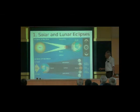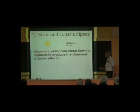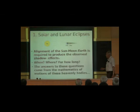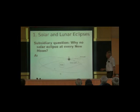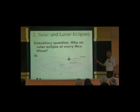The alignment of the sun, moon, and the earth is required to produce the observed shadow effects. One can ask: when does it occur, where does it occur, and for how long does it last? The answer to these questions came from the mathematics of motions of heavenly bodies. A subsidiary question: why is there no solar eclipse at every new moon? If they come in a line at every new moon, why not a solar eclipse every time?